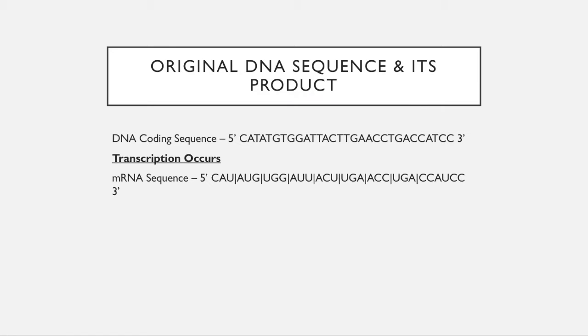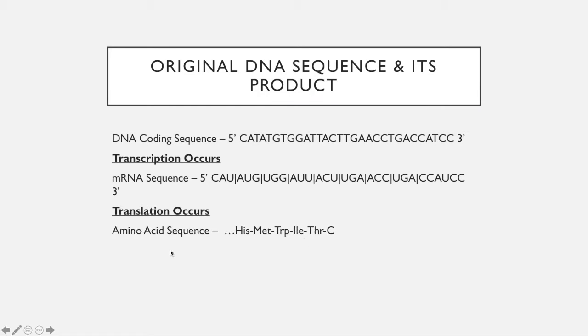The lines represent the reading frames, which will occur in translation when it goes through the ribosome, and becomes the amino acid sequence: histidine, methionine, tryptophan, isoleucine, threonine, and stop.